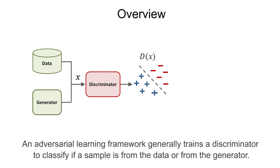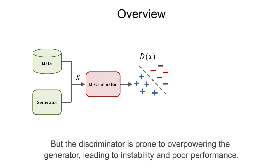An adversarial learning framework generally trains a discriminator to classify if a sample is from the data or from the generator. But the discriminator is prone to overpowering the generator, leading to instability and poor performance.